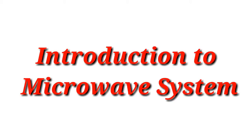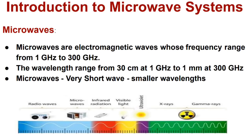Dear students, today we are going to discuss about the basics of microwave systems. Microwaves are generally electromagnetic waves whose frequency range from 1 gigahertz to 300 gigahertz. The wavelength ranges from 30 centimeters at 1 gigahertz to 1 millimeter at 300 gigahertz. Microwaves are also called very short pulse waves since they have smaller wavelengths.